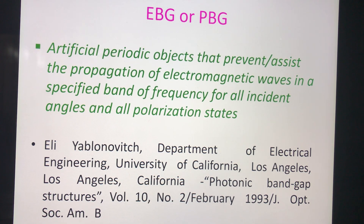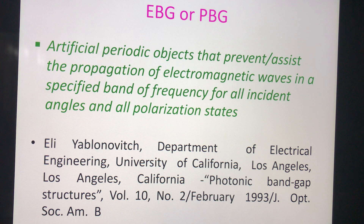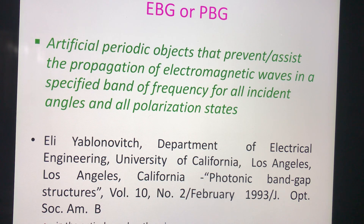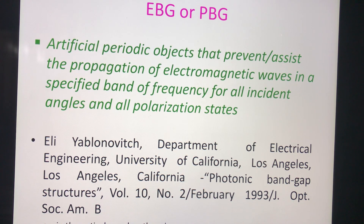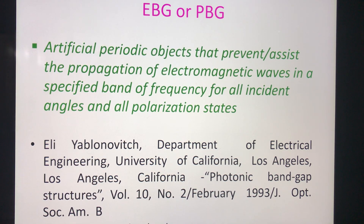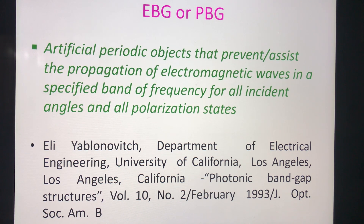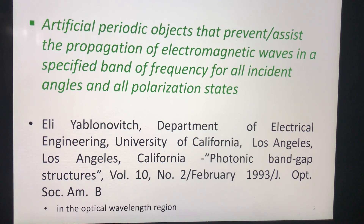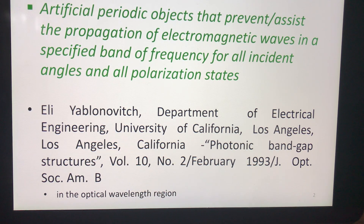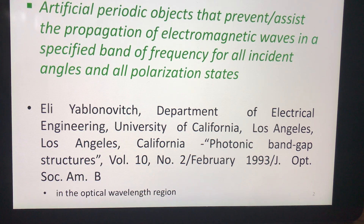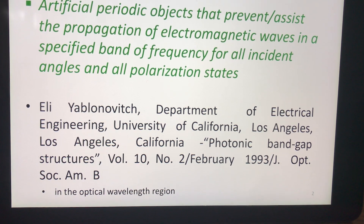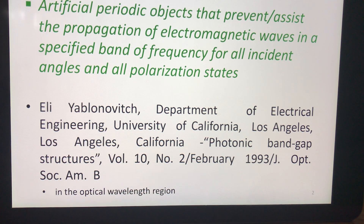What is an EBG? Electromagnetic Band Gap Structure, shortly called as EBG or PBG — that is photonic band gap structures — are artificial periodic objects that can prevent or assist the propagation of electromagnetic waves in a specified band of frequencies, for all incident angles and all polarization states. This was first developed by ELI at the University of California in 1993, who devised an experimental setup and proved that no waves can pass through this structure in a specified microwave frequency range.